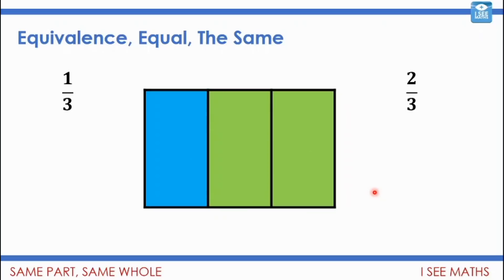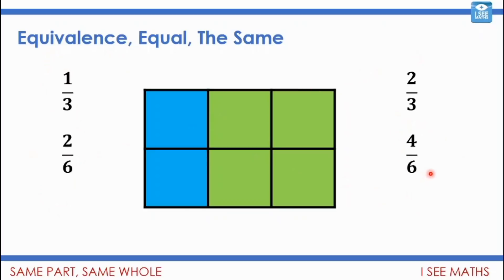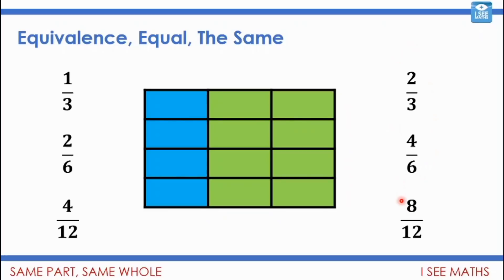Have a look at how the amount of blue and the amount of green stays the same — the shape stays the same. But if I just cut that up differently, I could describe that same part as two parts out of a whole of six. So a third and two-sixths are equivalent. How much is green? Well now it's four-sixths — it was two-thirds and now it's four-sixths, but it's still the same amount. If I cut it up more, I could describe this as four-twelfths. Four-twelfths is equivalent to a third and two-sixths, and the green would be eight-twelfths.